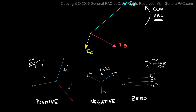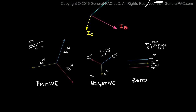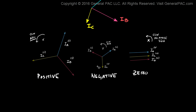This is what we described in the previous video tutorials. We have an unbalanced set of 3 phasors, and the positive sequence component, negative sequence component, and zero sequence component decomposition of the unbalanced set of phasors. So how do the A operators fit into this picture?